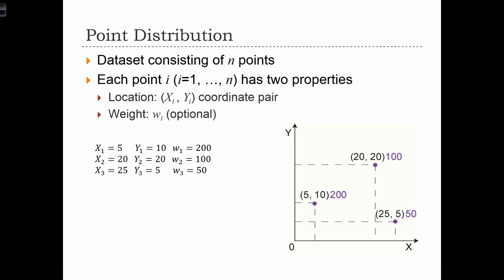Before we move on to examples of spatial descriptive statistics, we need to briefly define the point distribution. Assume that we have a dataset consisting of n points. Each point i, where i goes from 1 to n, has two properties. The first property is its location, which is stored as a coordinate pair. So xi is the x-coordinate of the location, and yi is the y-coordinate of the location.